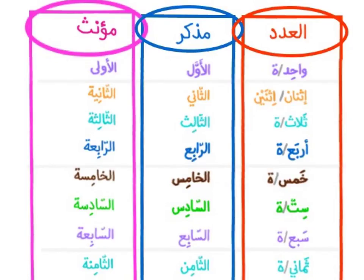Now more on the أعداد الترتيبية. Let's look at the cardinal numbers and all the ordinal numbers. In this chart you have the cardinal numbers — the numbers you count with, 1, 2, 3, 4, 5 — and then you have the corresponding ordinal numbers in المذكر, masculine, and المؤنث, feminine.